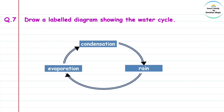Question 7: Draw a labeled diagram showing the water cycle. A diagram is drawn here showing evaporation, then condensation, and then rain — illustrating the complete water cycle.